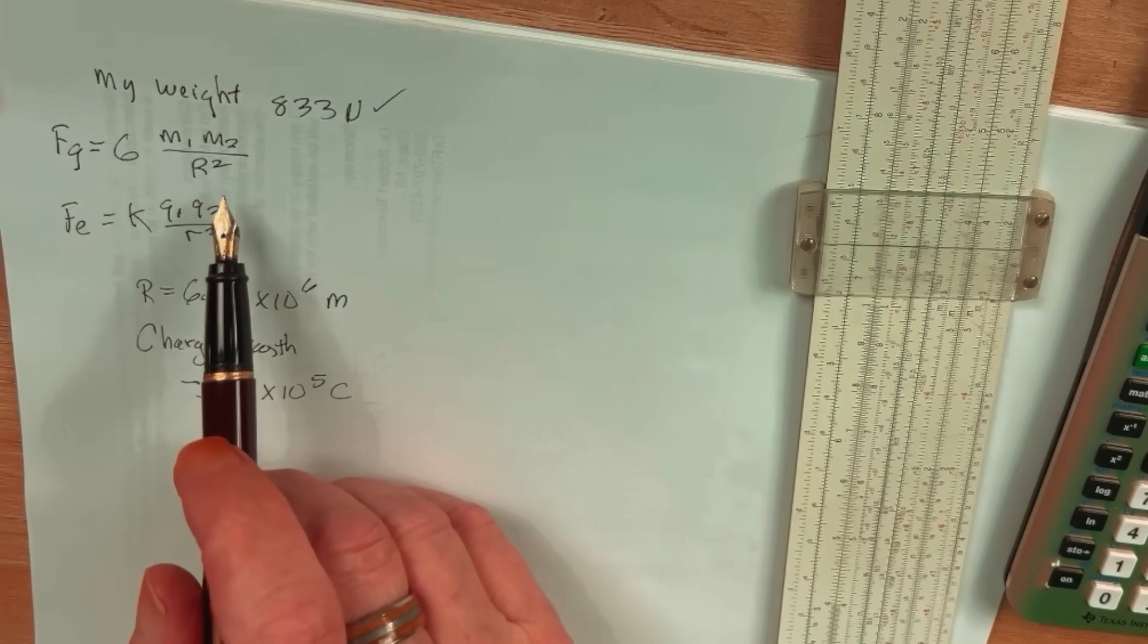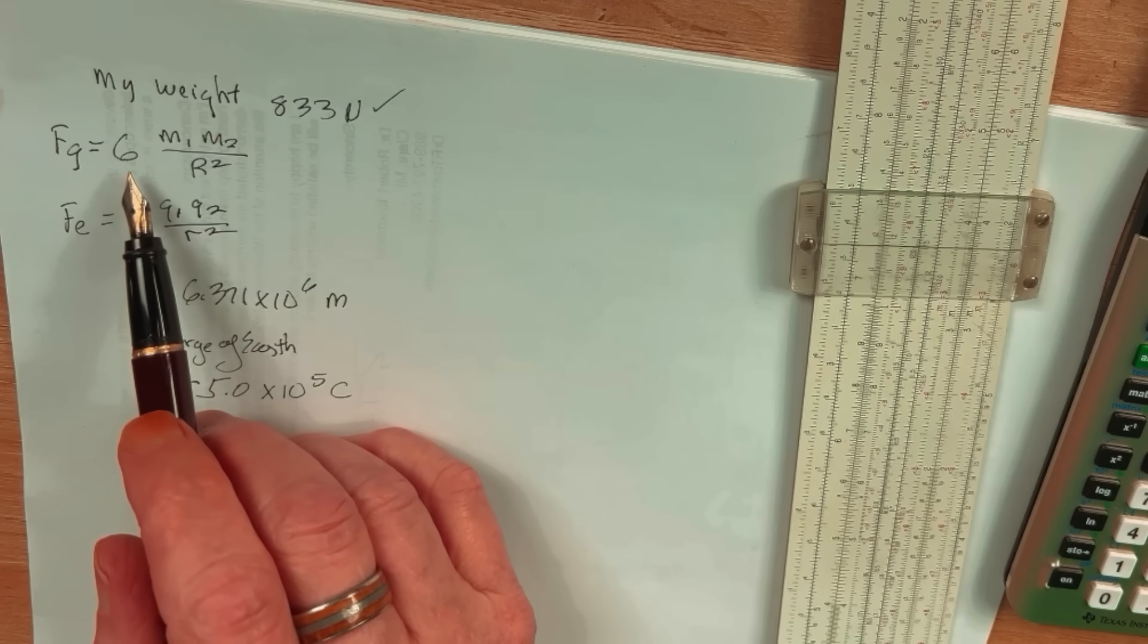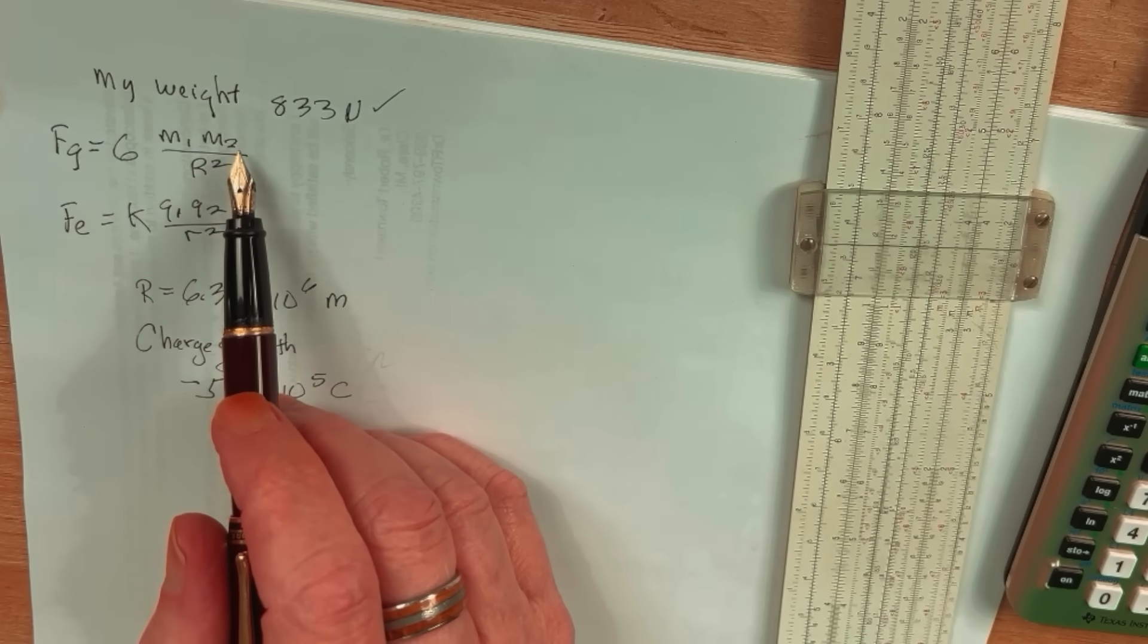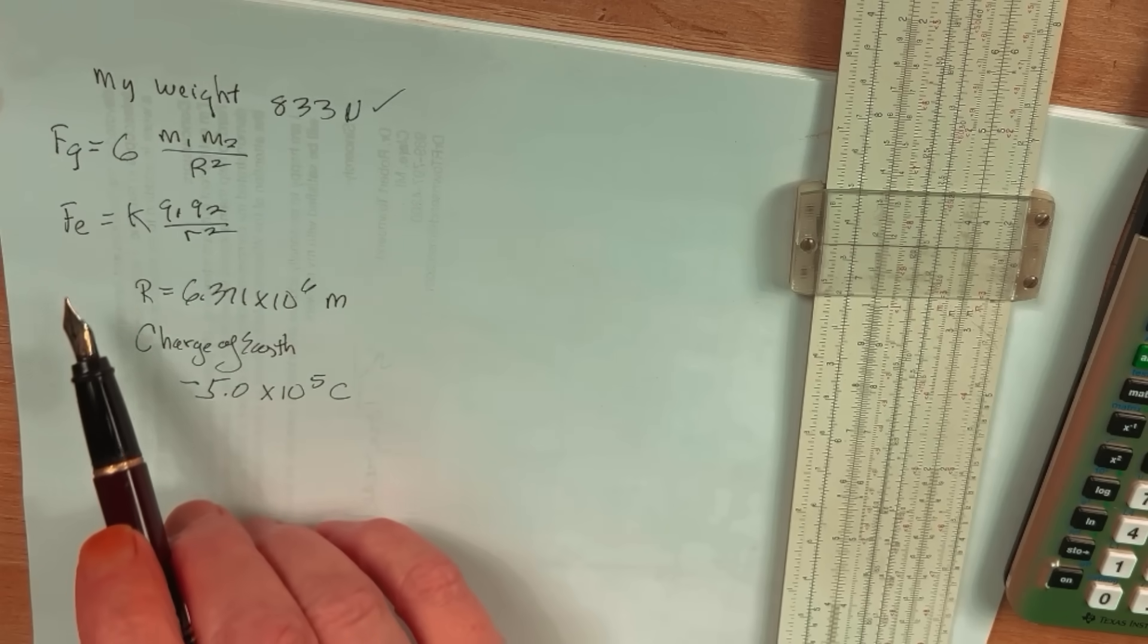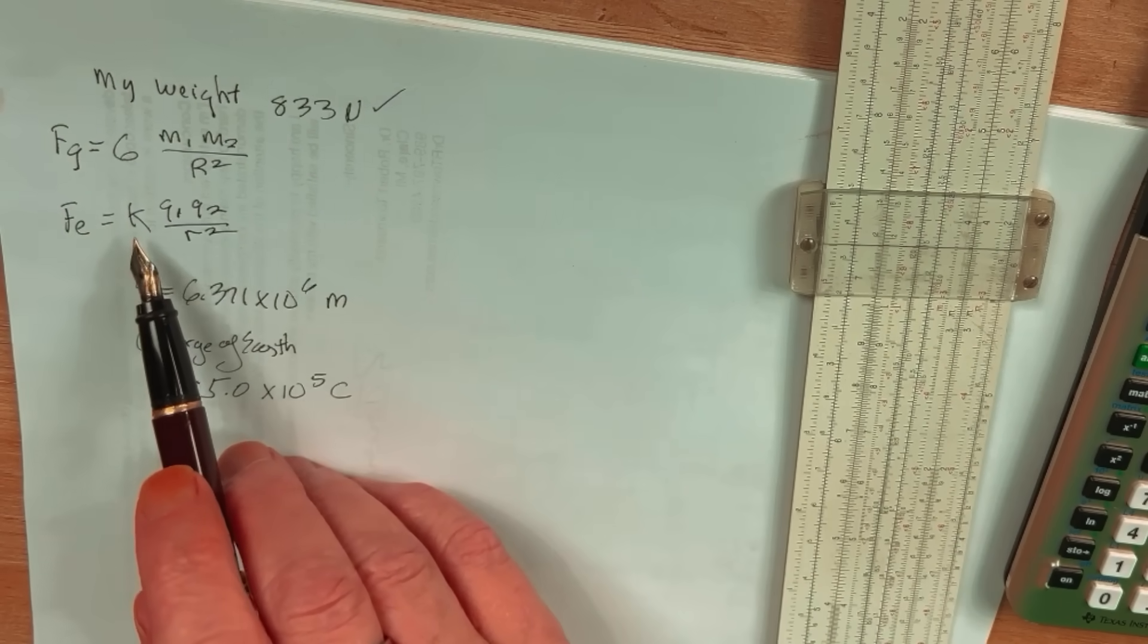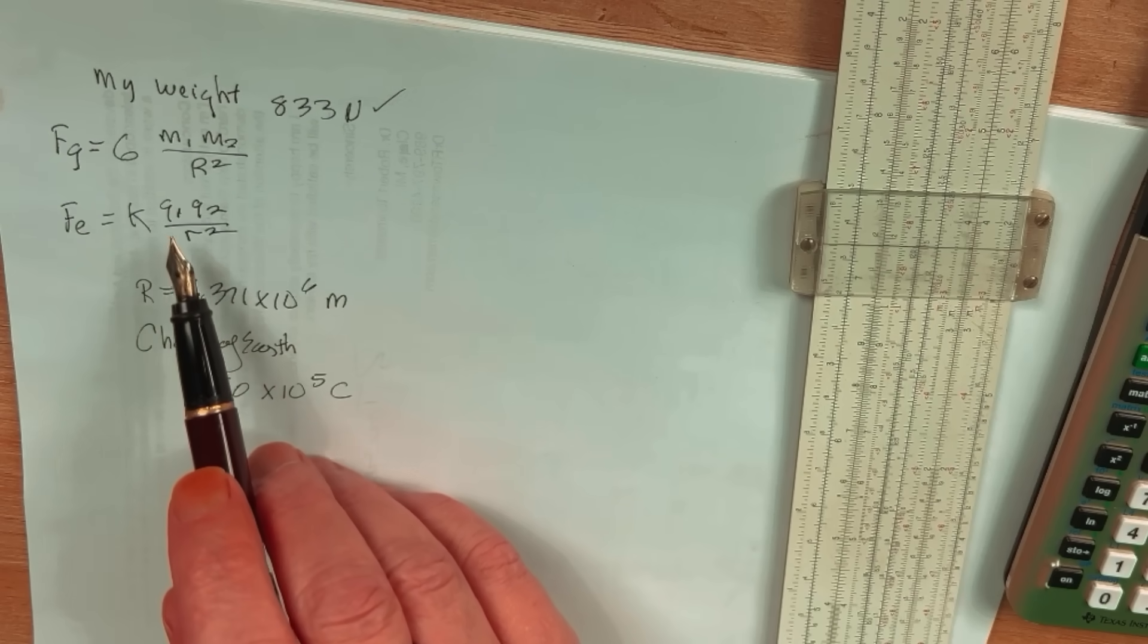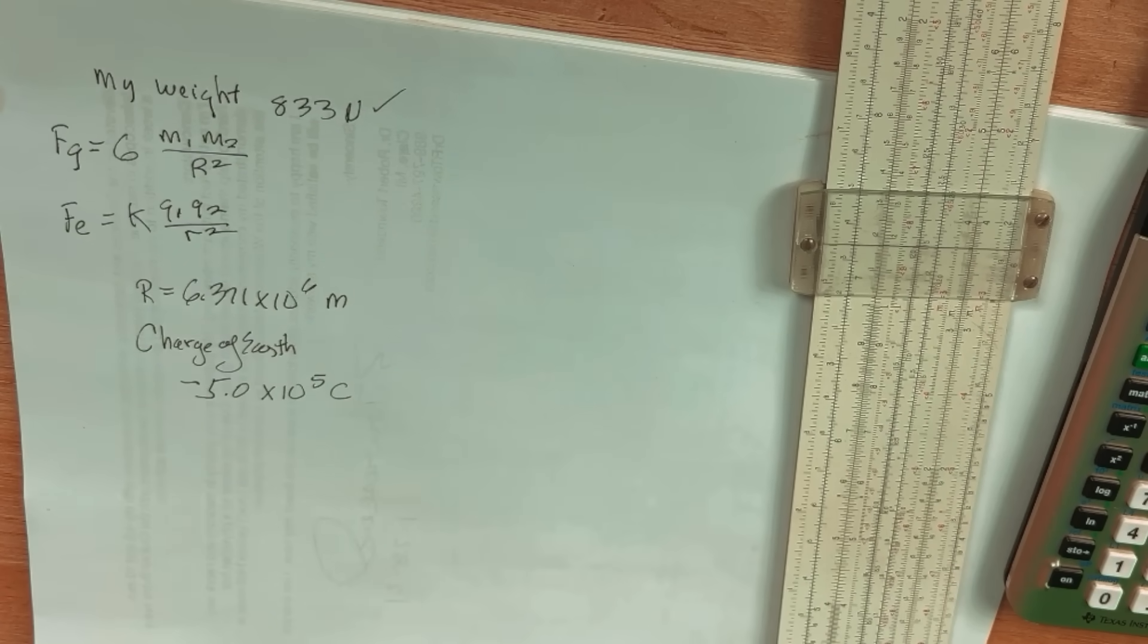Now, the universal law of gravity, as you may know, is the gravitational constant, big G, times mass 1 times mass 2 over the radius squared. Coulomb's law is very similar, and that is the force of electrostatic attraction is a constant K times charge 1 times charge 2 divided by the radius squared.